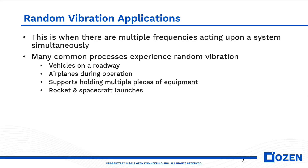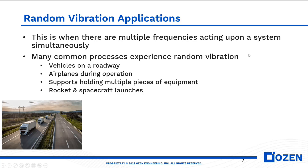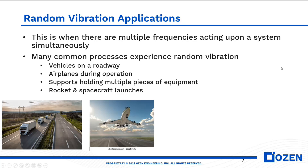Common processes that experience random vibration include vehicles on a roadway — either through freight transportation or any kind of devices or suspension in your vehicles and cars. All of these need to go through random vibration analysis. Airplanes during operation also experience this, whether through taxiing on the runway, during takeoff, or in flight — all the loads and vibrations from the engines, turbines, and wind resistance are taken randomly throughout the system.